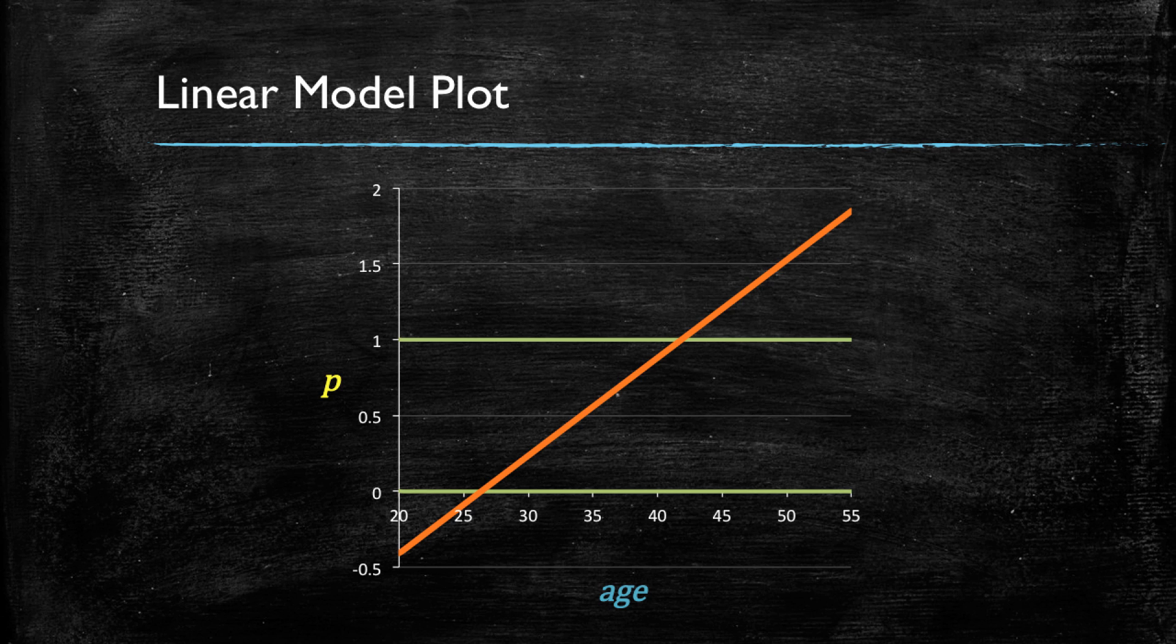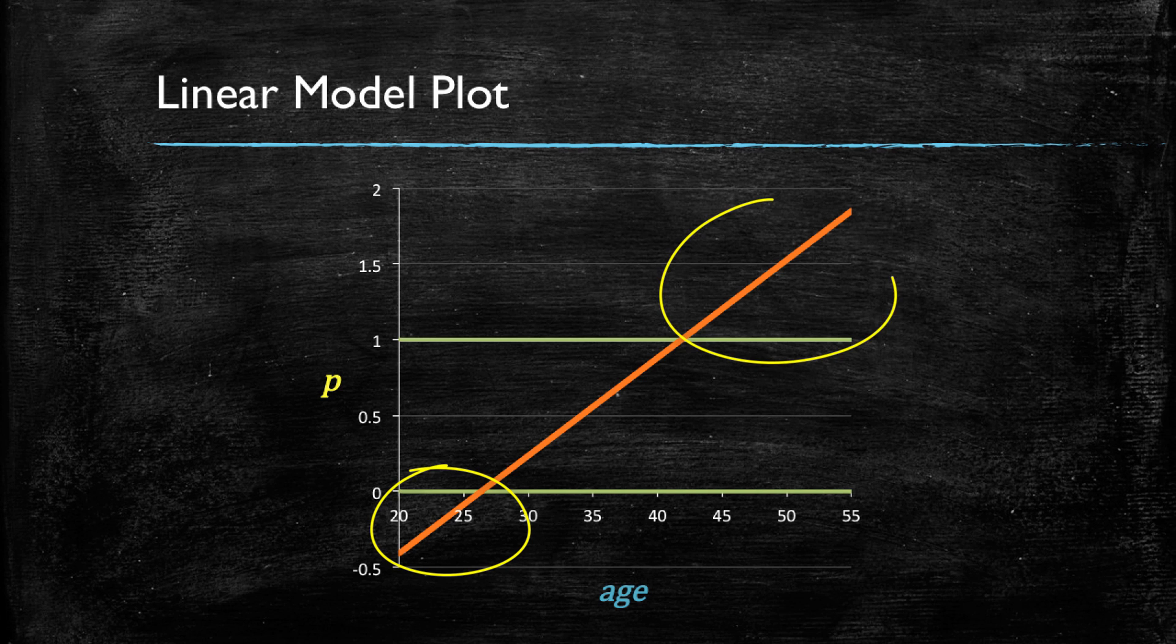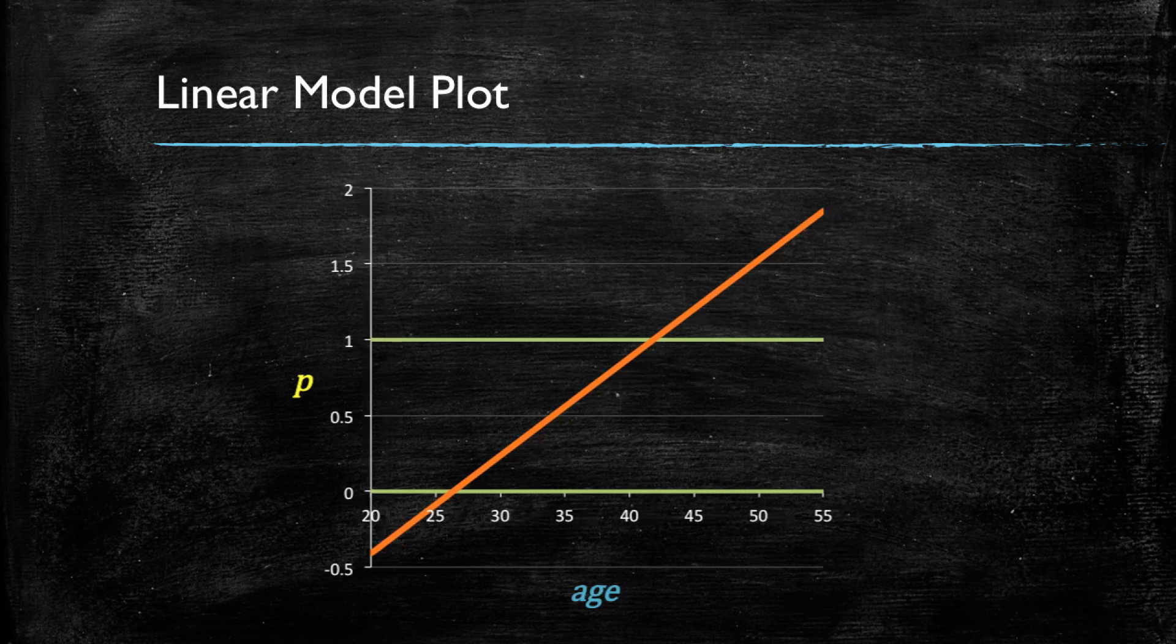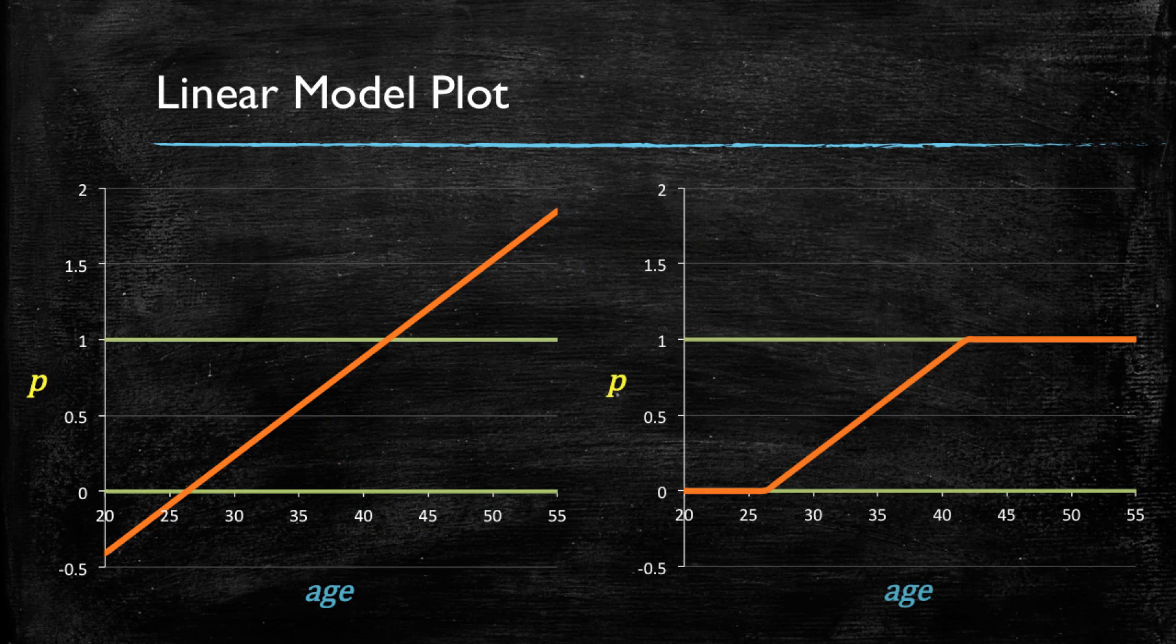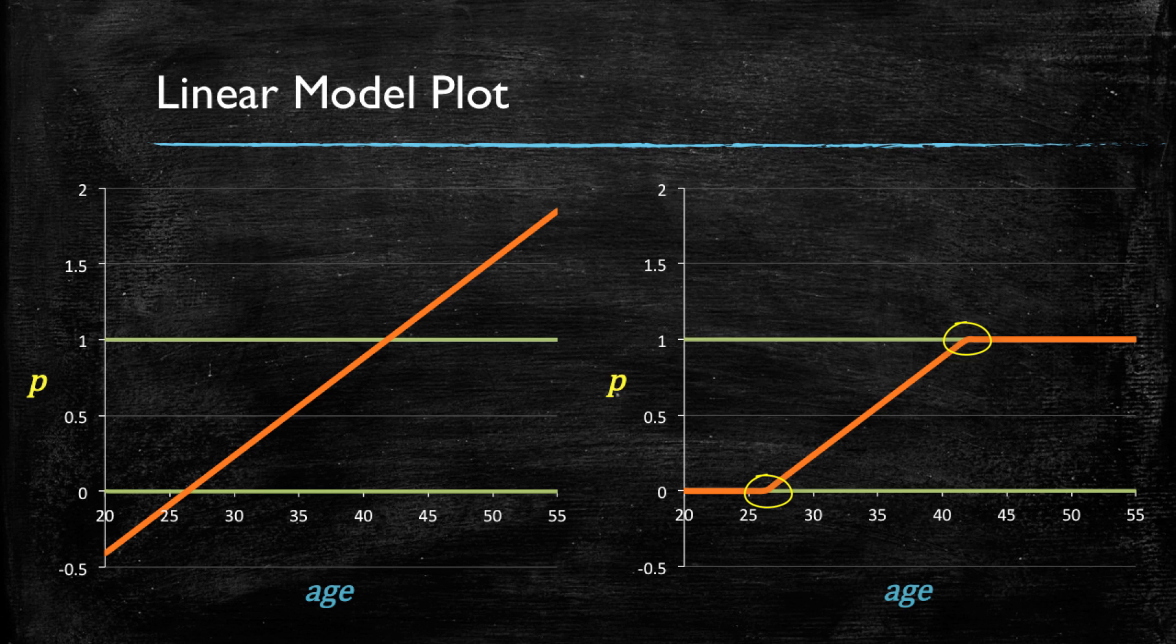How could we fix this? One option is to artificially cap the linear model and say, whenever the estimated probability is below a 0, make it a 0. And whenever the estimated probability is above 1, make it a 1. And this would give us a spline function as the one shown with those breaks in the function.